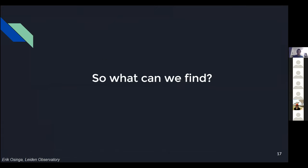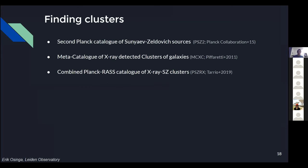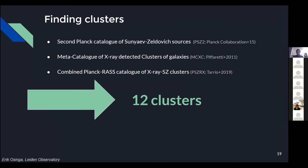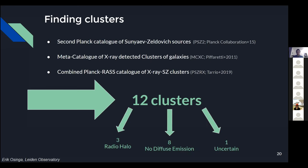The analysis involved taking the LOFAR deep fields images and searching through three major cluster catalogs: the Second Planck catalog of Sunyaev-Zel'dovich detected sources, the Meta-Catalog of X-ray detected Clusters of Galaxies (MCXC), and the Combined Planck-ROSAT All-Sky Survey catalog of X-ray and SZ detected clusters. We found 12 clusters within two and a half degrees of our pointing centers. Among these we found three radio halos, eight cases with no diffuse emission detected, and one uncertain case.